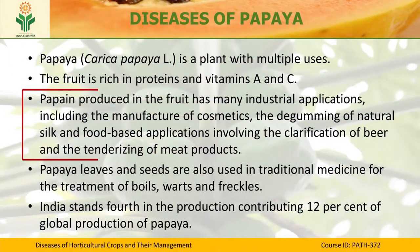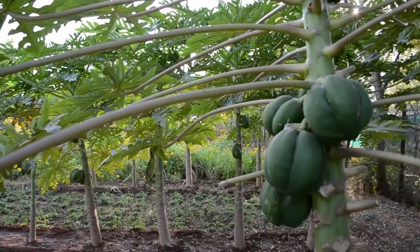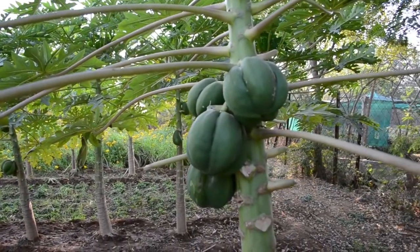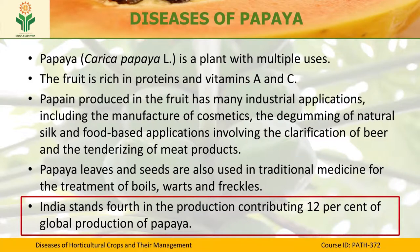Apart from this, the papaya fruit is also used industrially for the extraction of papain, which has a number of uses including the manufacture of cosmetics, the degumming of natural silk, and food-based applications like the clarification of beer and the tenderizing of meat products. Apart from the fruit, other parts like leaves and seeds are also used in traditional medicine for the treatment of boils, warts, and rickets.